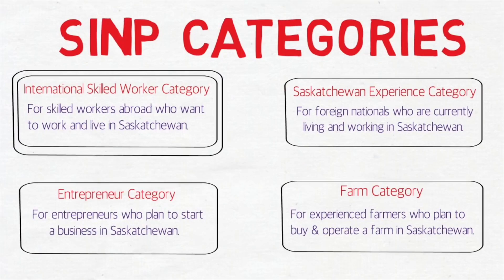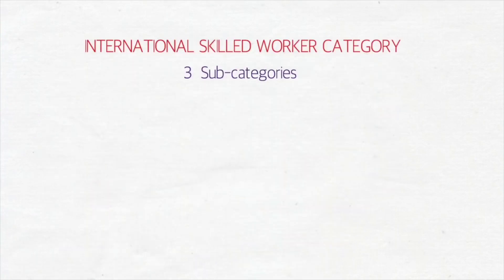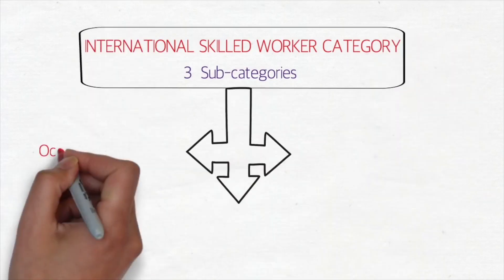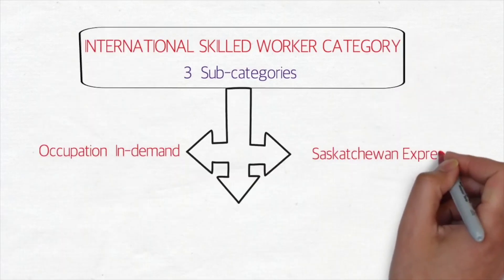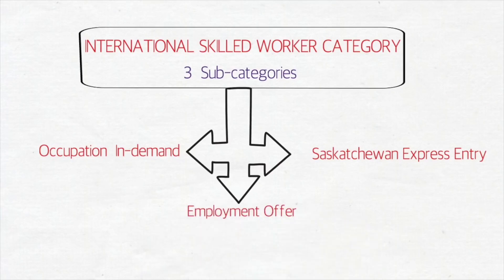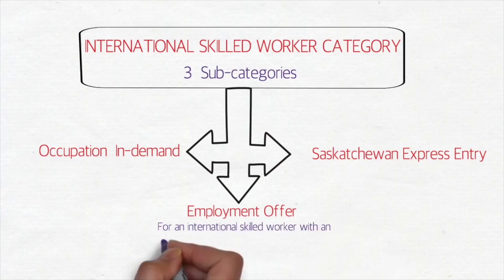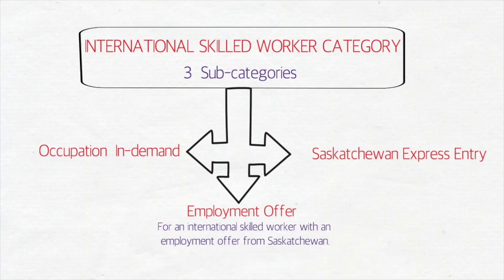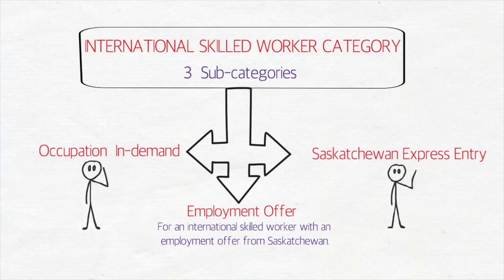Today we'll be talking about the International Skilled Worker category, as I believe this is more applicable to many immigrants. For this category, there are three subcategories: one is Occupation in Demand (OID), second is Saskatchewan Express Entry, and third is Employment Offer — for international skilled workers with an employment offer from Saskatchewan, which requires an LMIA. Today we'll focus on the two subcategories: Occupation in Demand and Saskatchewan Express Entry.